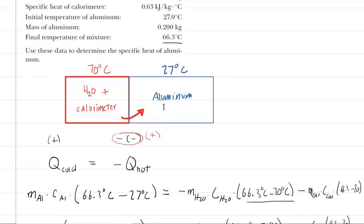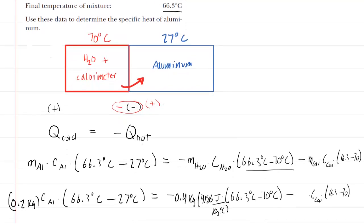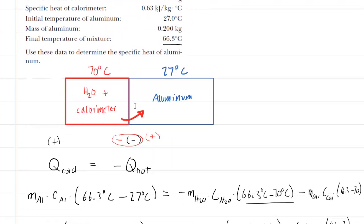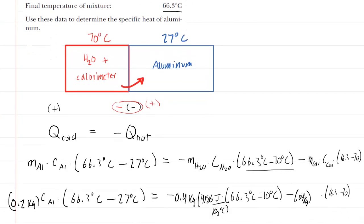We need the mass of the calorimeter. That was given to be 0.04 kilograms. Squeeze this in here. And then the specific heat capacity of the calorimeter was given as 0.63. We've got to be careful here. That's in kilojoules for some reason they did that to us. So for this 0.63, you're going to have to multiply that by 10 to the power of 3. That will put it in joules per kilogram degrees Celsius. And then you're going to multiply by that temperature change, and that is negative 3.7 degrees Celsius.